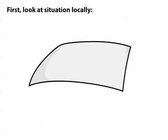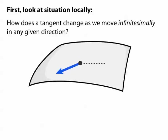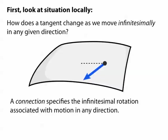we could imagine specifying how this vector changes as we move infinitesimally in any given direction. In our case, we're just going to consider unit vectors, so we're going to ask, how does it rotate? And this is exactly the information that a connection specifies.